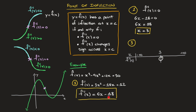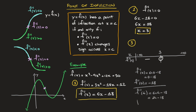Now I check the sign on either side using the expression 6x minus 18. Taking x equals 0 (less than 3): f''(0) equals 6 times 0 minus 18 equals negative 18, which is negative, so I write a minus sign. Taking x equals 4 (greater than 3): f''(4) equals 6 times 4 minus 18 equals 24 minus 18 equals 6, which is positive, so I write a plus sign. This proves that f(x) has a point of inflection at x equals 3.